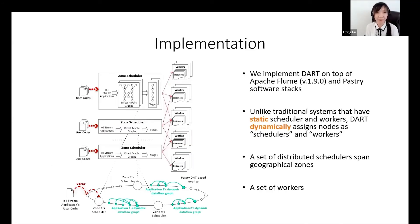Here is the implementation of the DART system. Instead of implementing the DART system from scratch, we implement DART on top of Apache Flume and the Pastry software stack. Flume is a distributed service for collecting and aggregating large amounts of streaming data, which is widely used in Kafka and the Spark ecosystem. Pastry is a DHT overlay network, which is widely used in many peer-to-peer applications such as Bitcoin and BitTorrent.